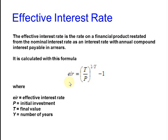Now, the effective interest rate is the rate on a financial product restated from the nominal interest rate, as an interest rate with annual compound interest payable in arrears. It is calculated with this formula. P is again the initial investment, T is the final value, and Y is the number of years.